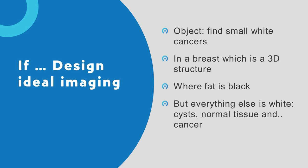If you came from another planet and were shown a woman's breast — large, soft, and fairly sensitive — and you were asked to design an ideal tool to image it, to find something small and white in a three-dimensional soft structure where the only black thing is fat, which is benign, and everything else is white — cysts, normal tissue, and cancer — it's really a difficult job. We're doing mammography because that's what we've been doing. Sometimes we need to think: is there something we could do differently?